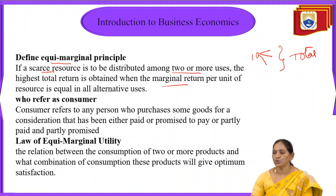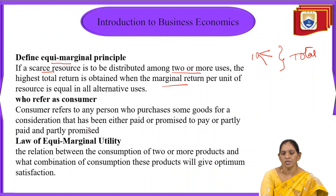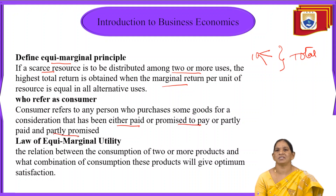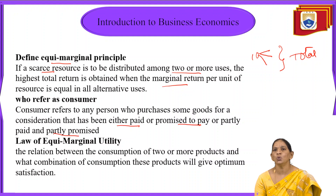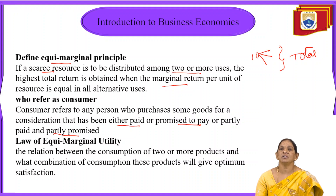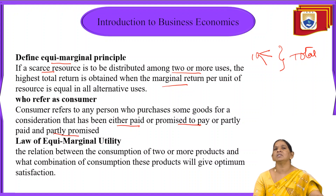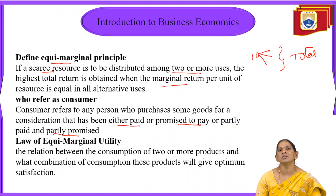Next, who refers to as a consumer? A consumer is any person who purchases goods for a consideration that has been either paid, promised to pay, or partly promised. Simply, it is a person who buys goods — not for free, but by paying some amount, fully, partly, or at a future date. Any purchasing of goods involving some consideration makes that person a consumer.